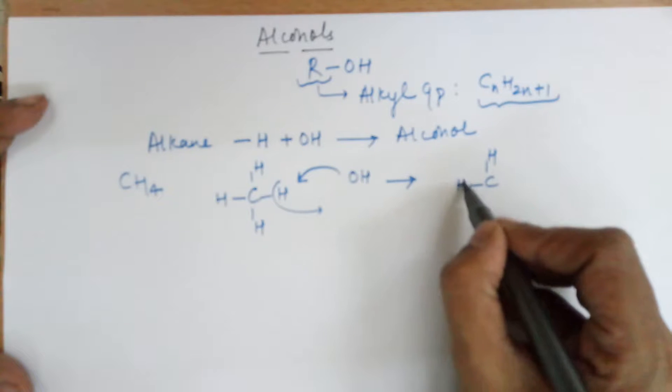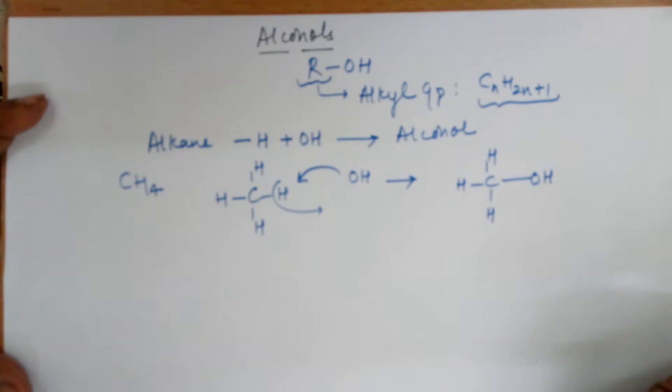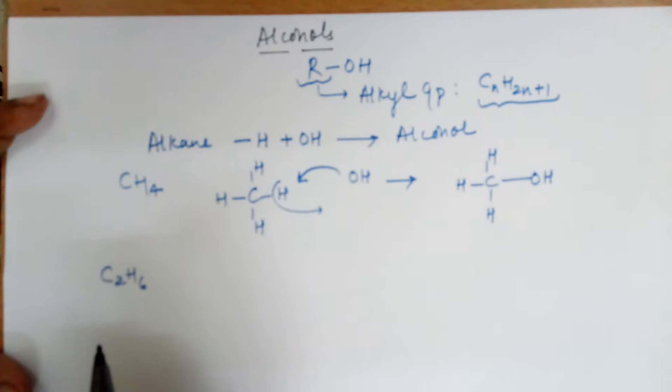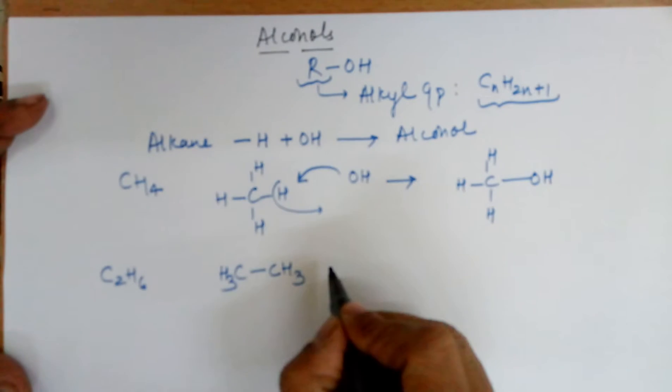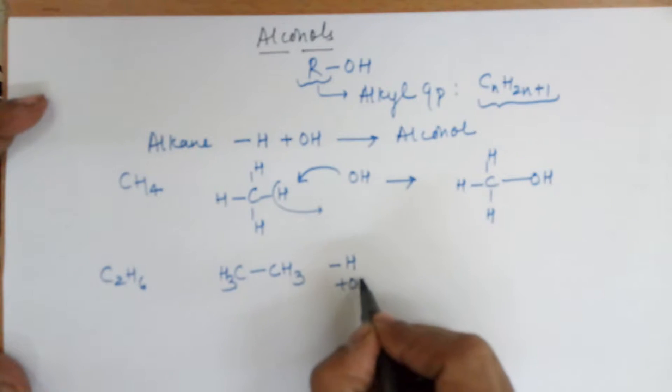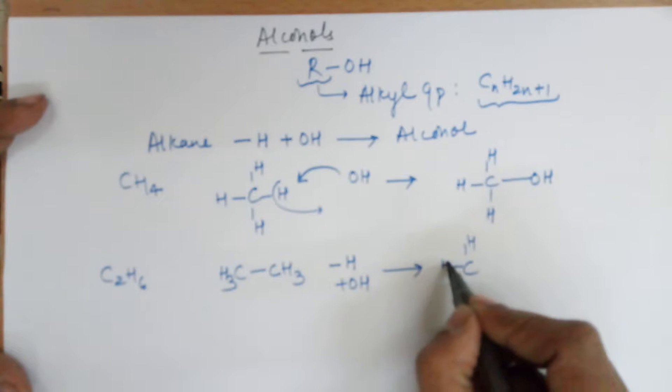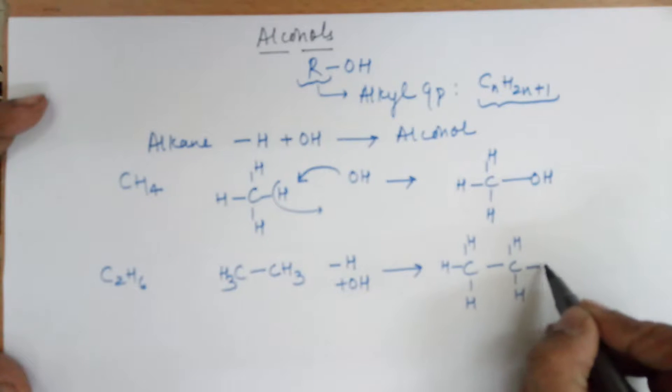Similarly, if you have ethane which is C2H6, drawing its structure you have CH3 and a CH3. I remove an H and I add an OH. The conclusion would be the first carbon or the second carbon—I've removed the H and added an OH.